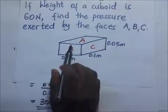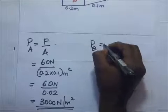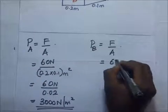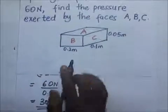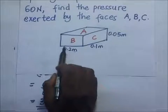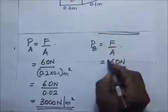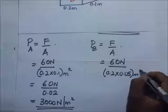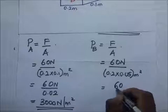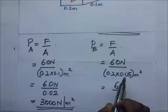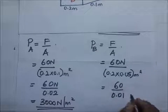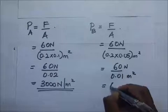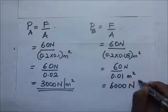Let's go on to the pressure of face B. The pressure of face B is equal to force over area, which is 60 newtons divided by the area. The dimensions of face B are 0.2 times 0.05, giving an area of 0.01 meters squared. So 60 divided by 0.01 gives us 6,000 newtons per meter squared.